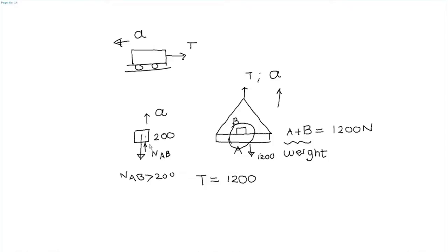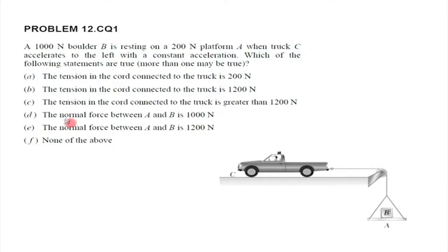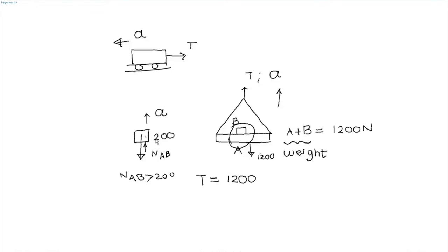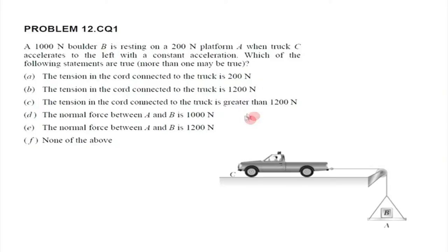This is the same as the elevator effect. If you are standing in an elevator that starts accelerating upwards, you feel like you are pressing more against the ground. If you stand on a weighing scale, the scale will show more than your regular weight — because that extra acceleration adds to the normal reaction. Similarly here, NAB must be more than 200, and therefore more than 1000 is also not the correct specific value since it depends on the acceleration. So the only true statement is that the tension in the cord connected to the truck is greater than 1200.